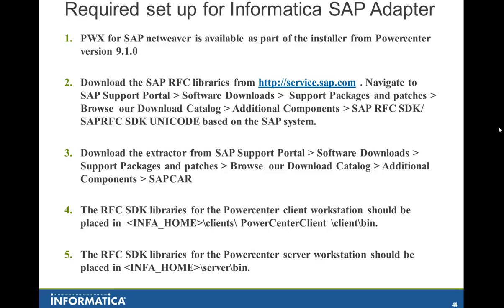Once you have installed PowerCenter, you have to download the SAP RFC libraries from the SAP Marketplace. Navigate to the SAP Support Portal, go to Software Downloads, then Support Packages and Patches, then Browse our Download Catalog, then Additional Components. Under that you will find the SAP RFC files. You can download either the Unicode version or the non-Unicode version based on your SAP system.